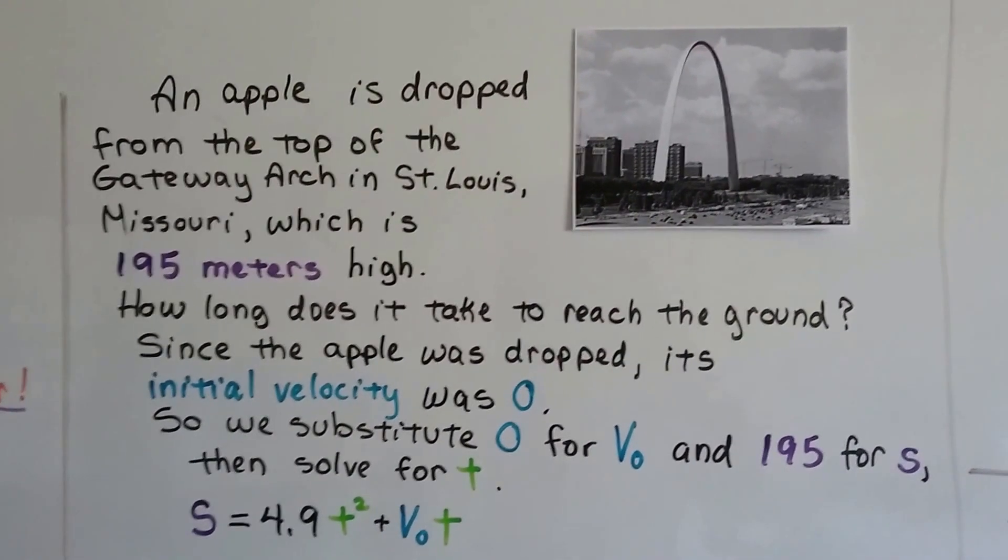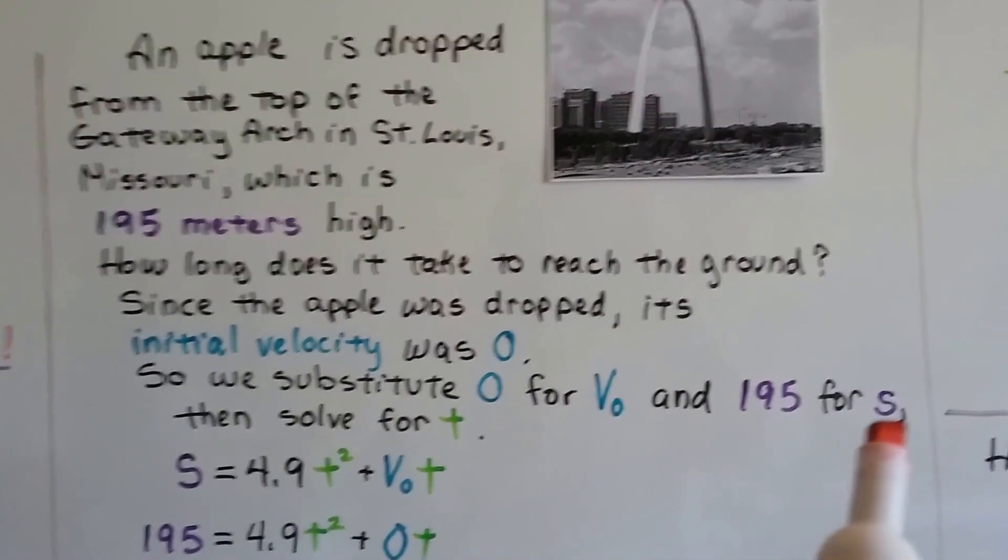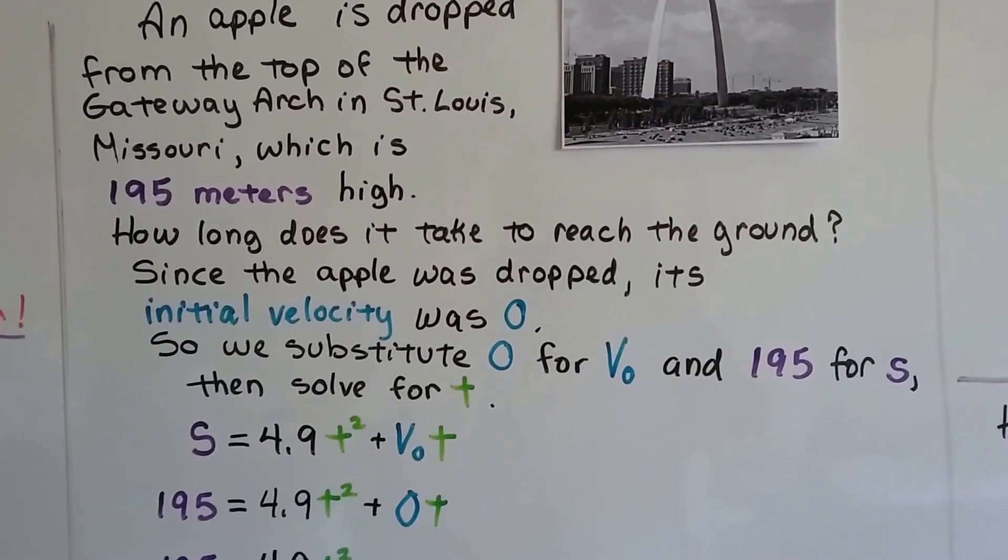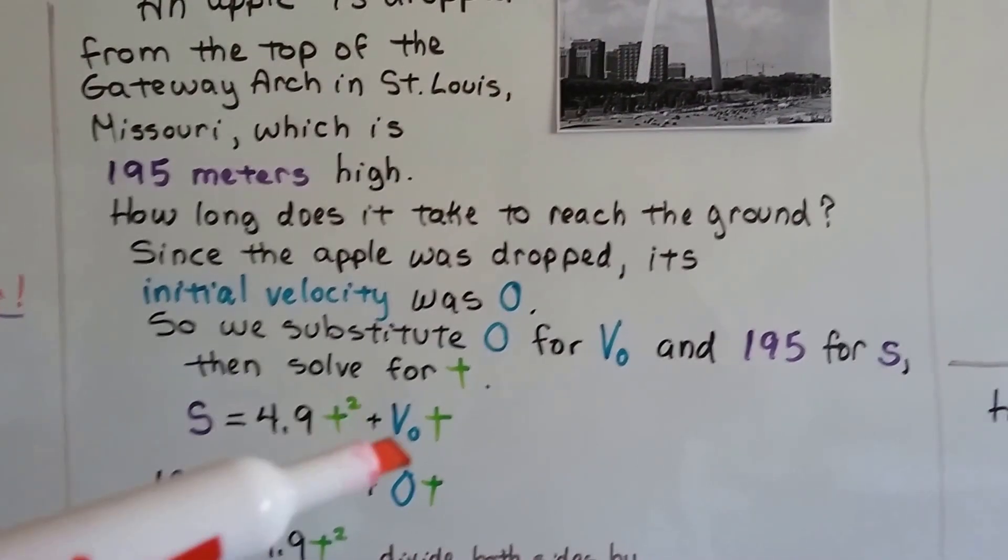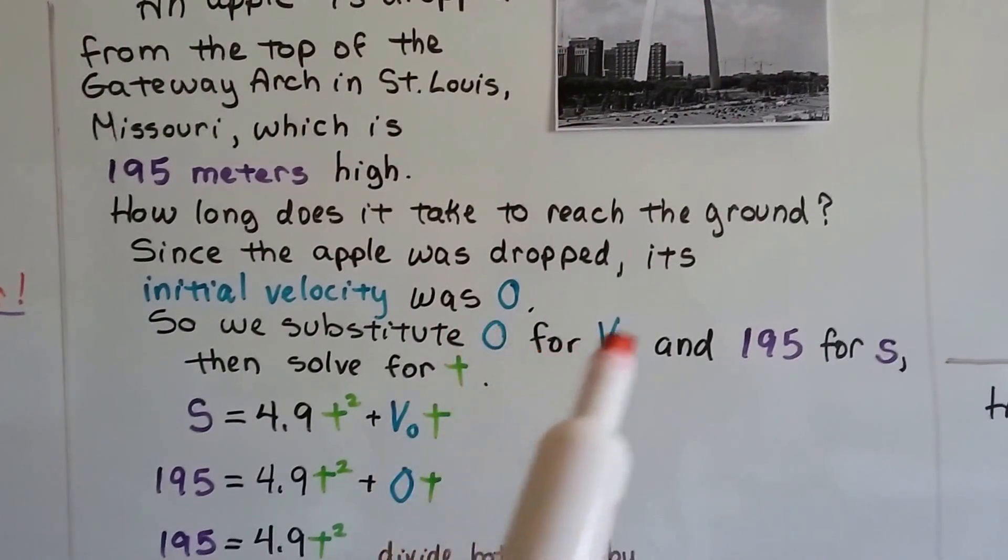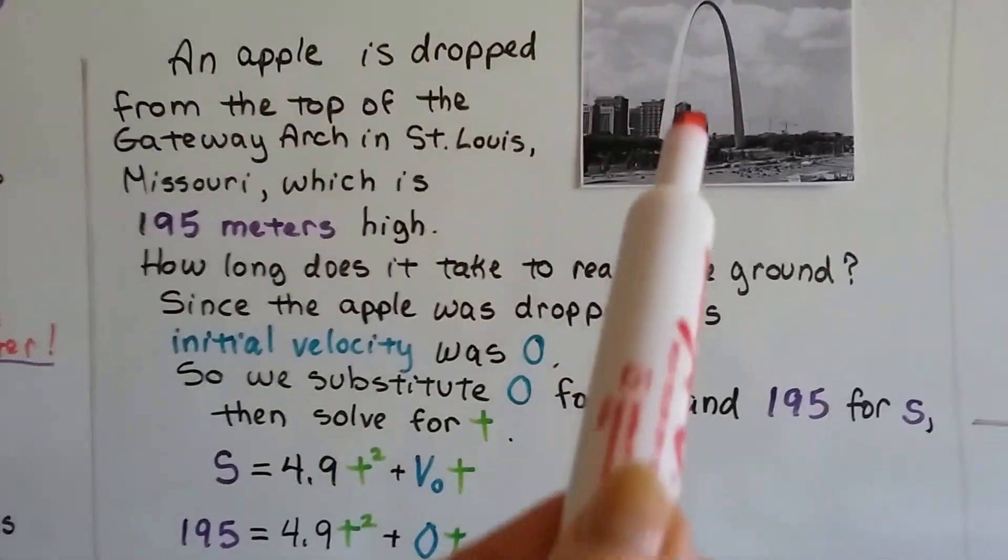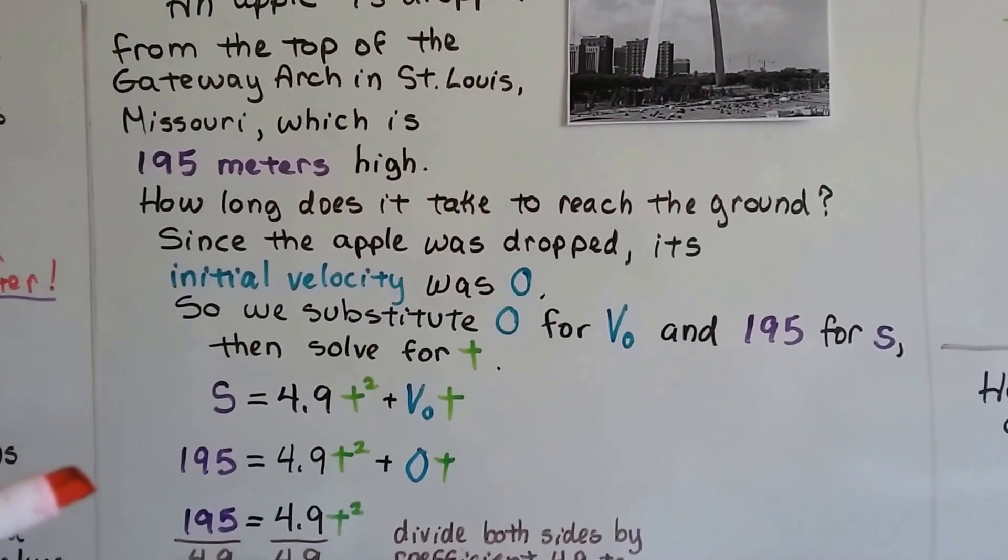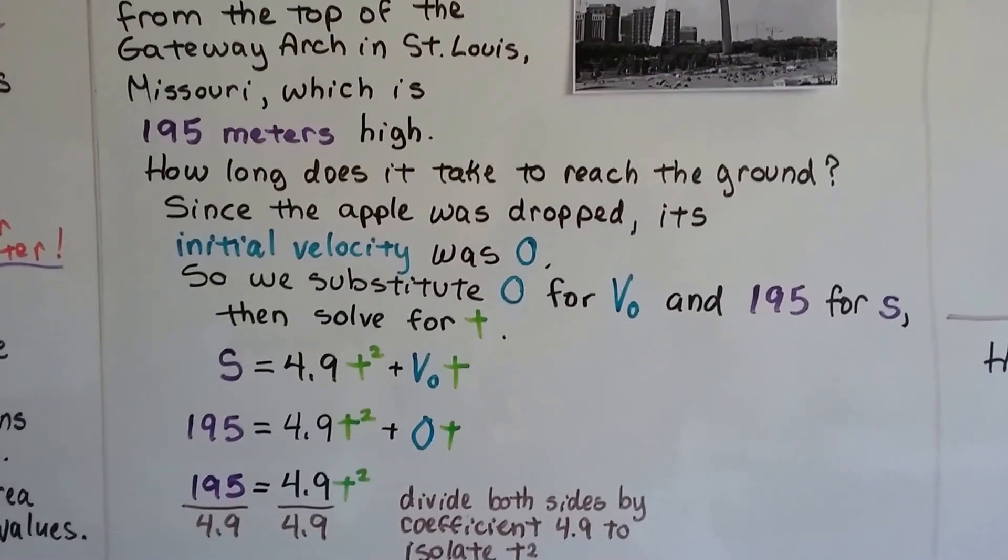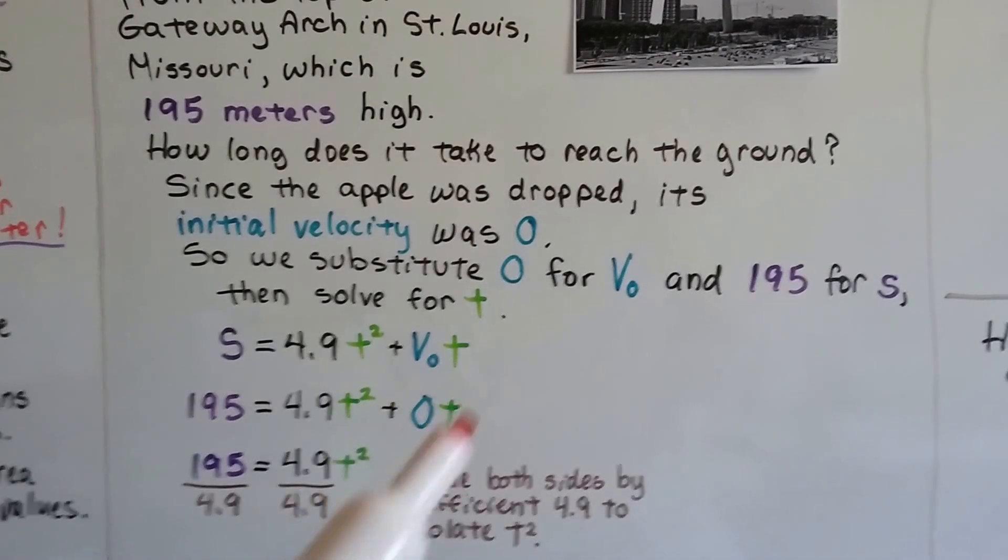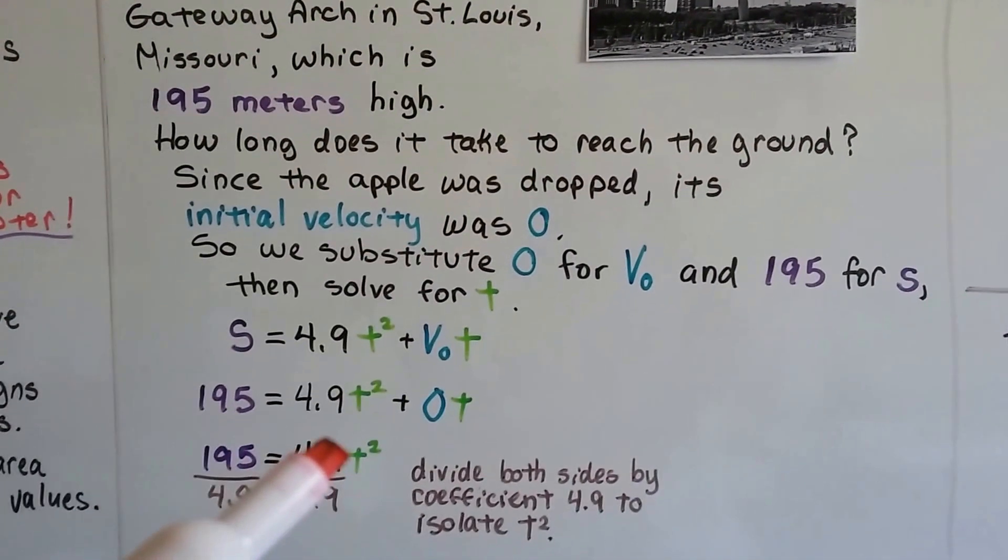Since the apple was dropped, its initial velocity was zero. So we substitute zero for v sub zero and 195 for s in our formula. Then we solve for t. So here's that formula again: s equals 4.9 times t squared plus v sub zero t. We're going to substitute zero for that v sub zero and 195 for s because that's how tall our arch is. Now we've got 195 equals 4.9 times t squared plus zero t. We don't need this at all, that's just going to be a zero no matter what t is. So we just have 195 equals 4.9 times t squared.